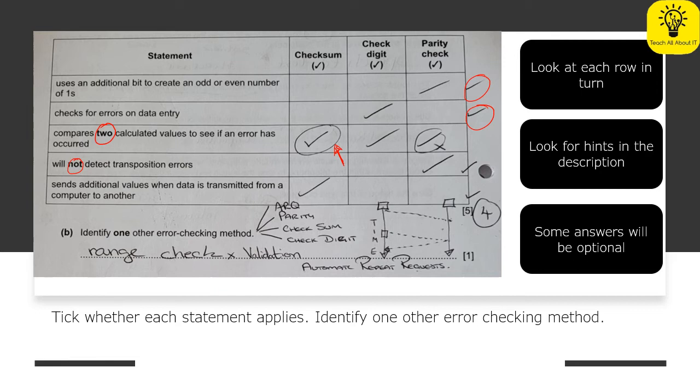Now the second part of this is identifying an error checking method. So the four that you're looking for here: they've already given you checksum, they've given you check digit, they've given you parity, and the last one is ARQ, which is A-R-Q—that is automatic repeat requests.